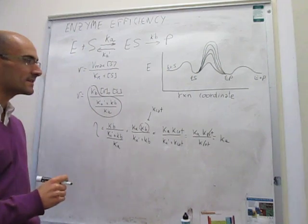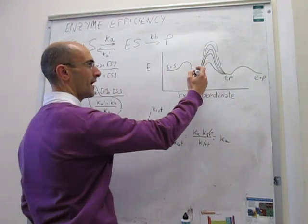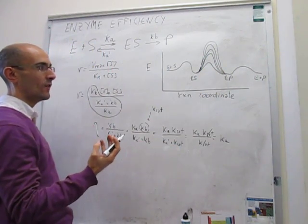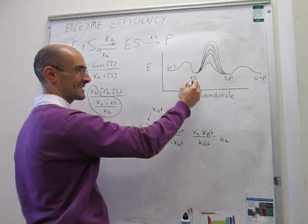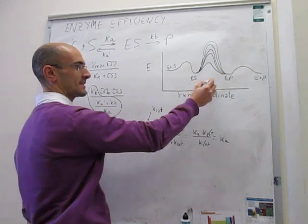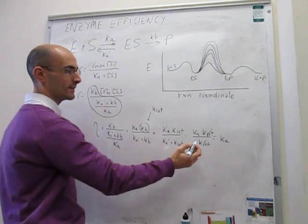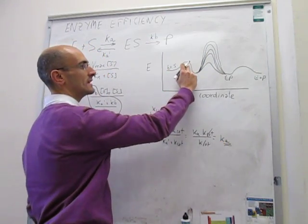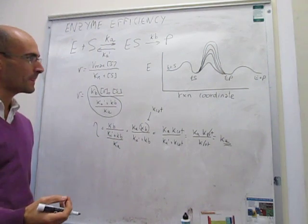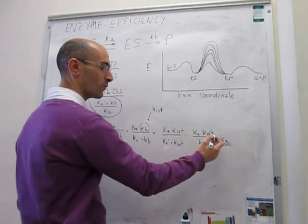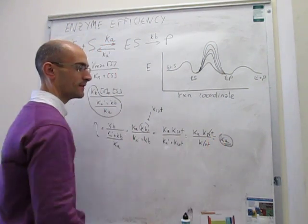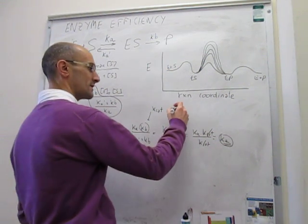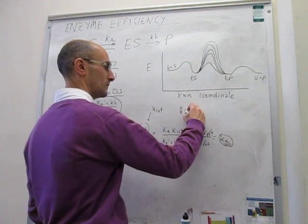So if the best enzymes are the ones that have decreased the barrier to the reaction so much that the rate of the reaction no longer depends on how fast can the enzyme turn the substrate into product, now the rate limiting step is actually determined by ka, which is simply the rate for association of the enzyme substrate complex.